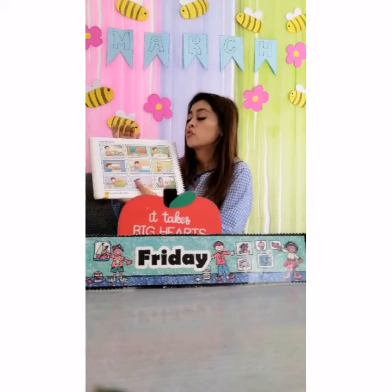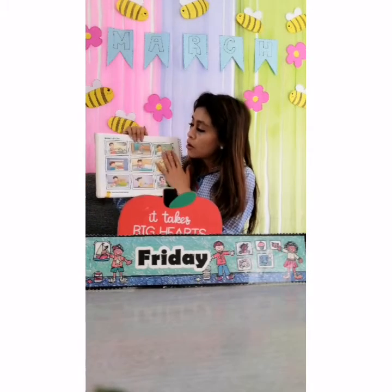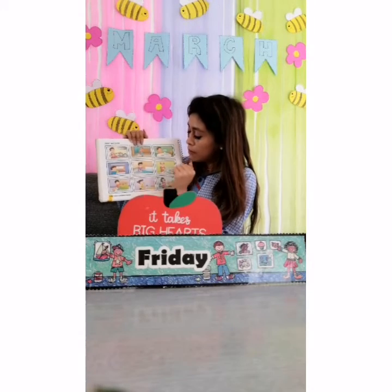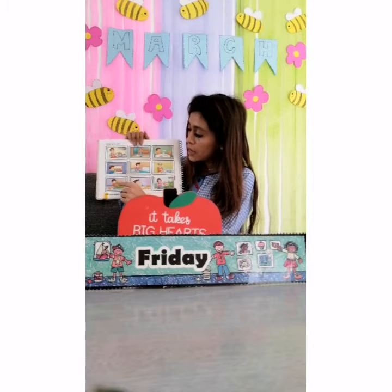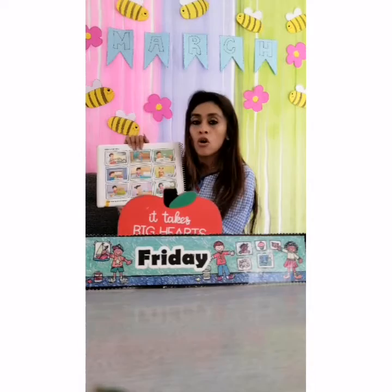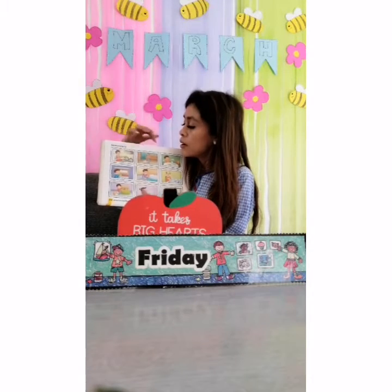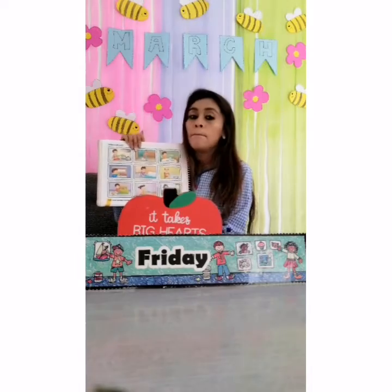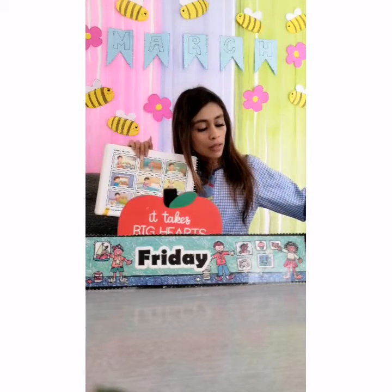Let's continue with the second activity on page number 112. We have the vocabulary: cook, set the table, make the bed, wash the dishes, water the plants, feed the pets, put away the toys, and put away the clothes. So let's listen and color the squares — with color pink, guys, let's color.